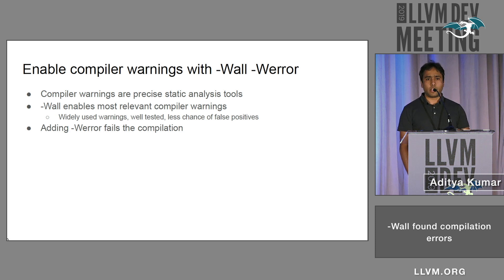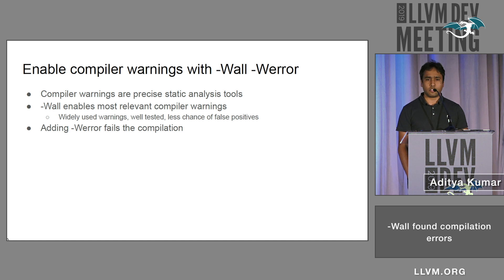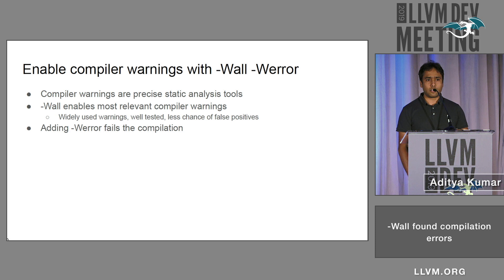When we enable -Wall, it'll just print a bunch of text on the console which nobody cares about. But when we add -Werror, then people start paying attention.